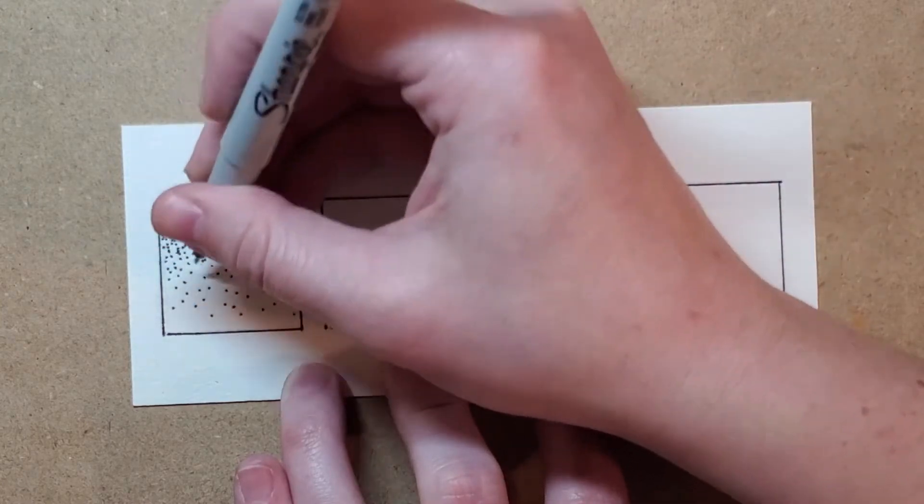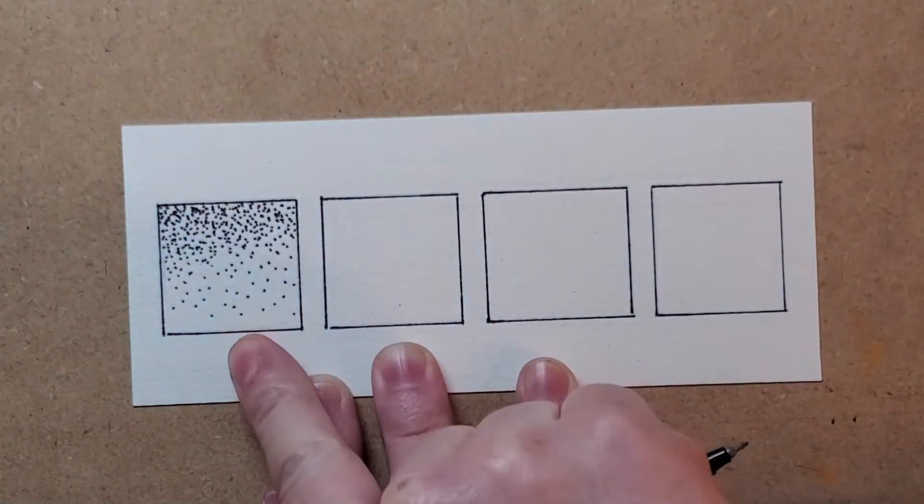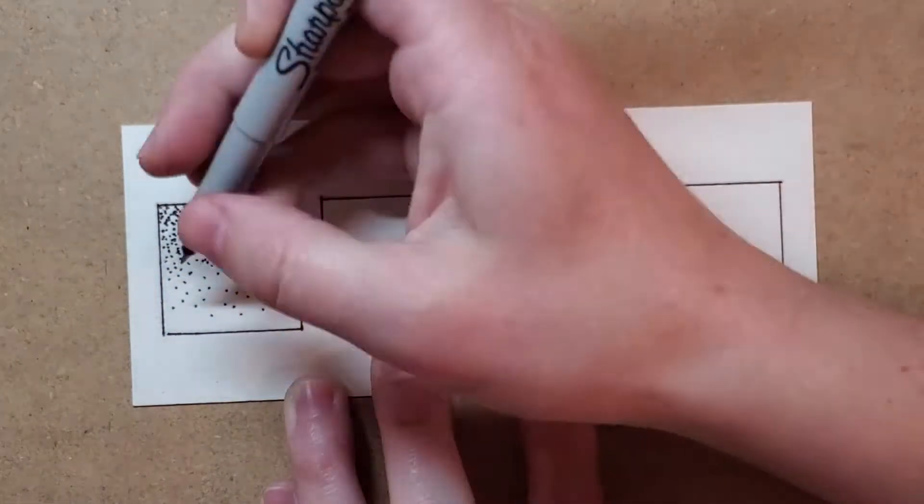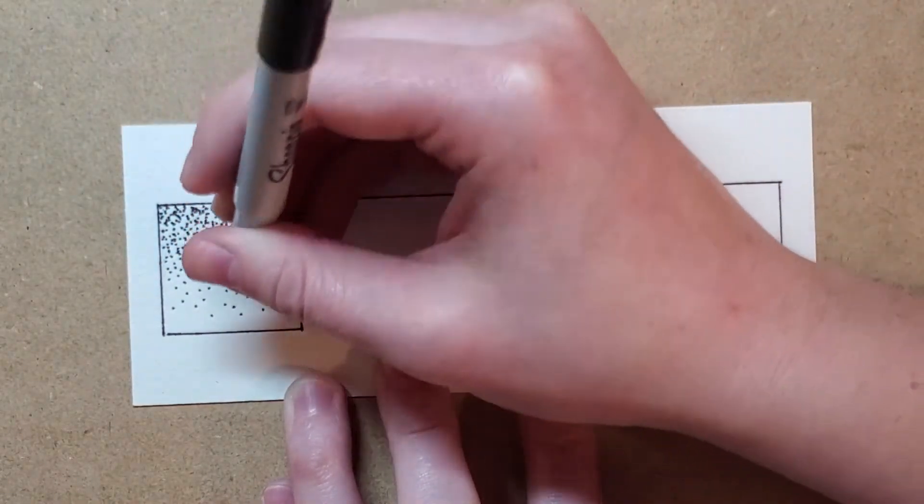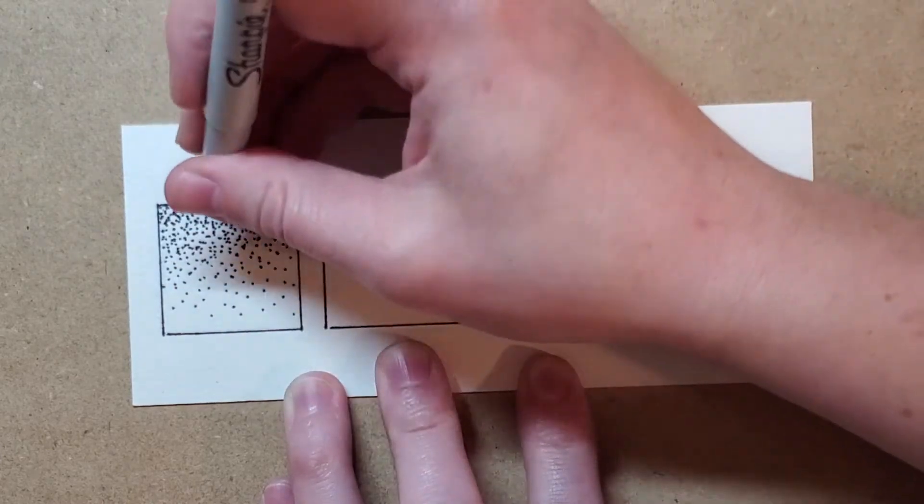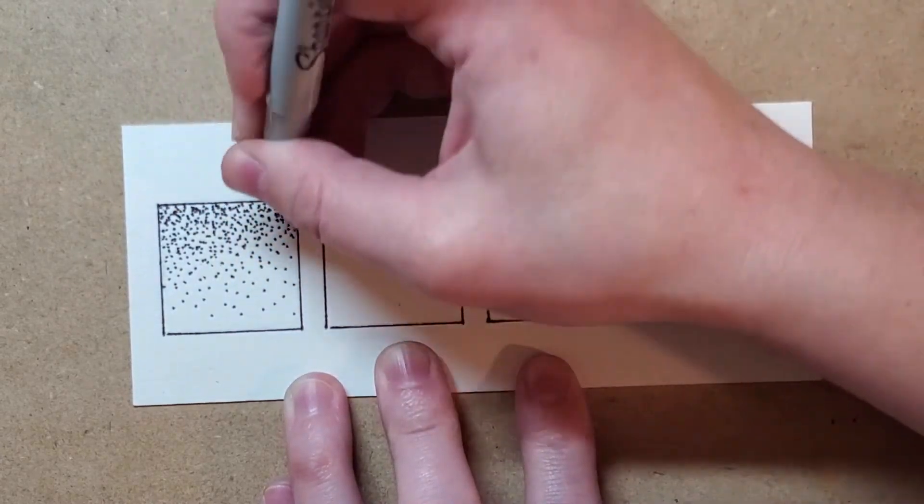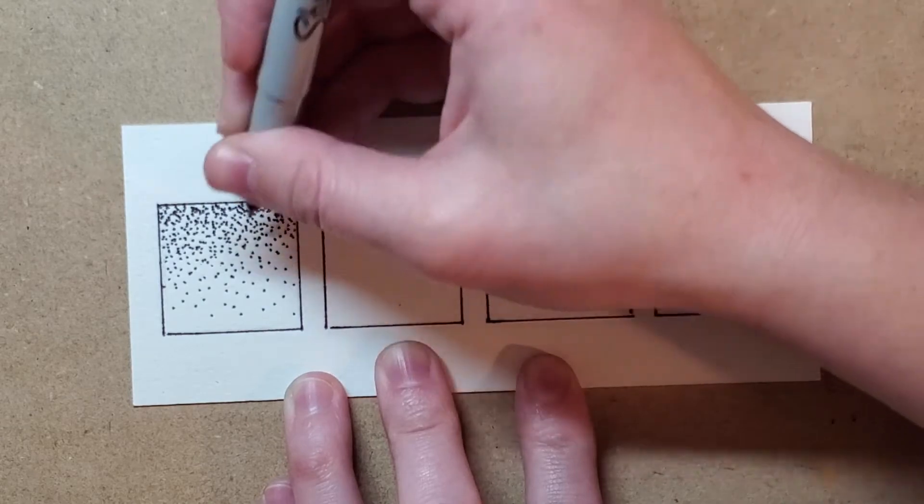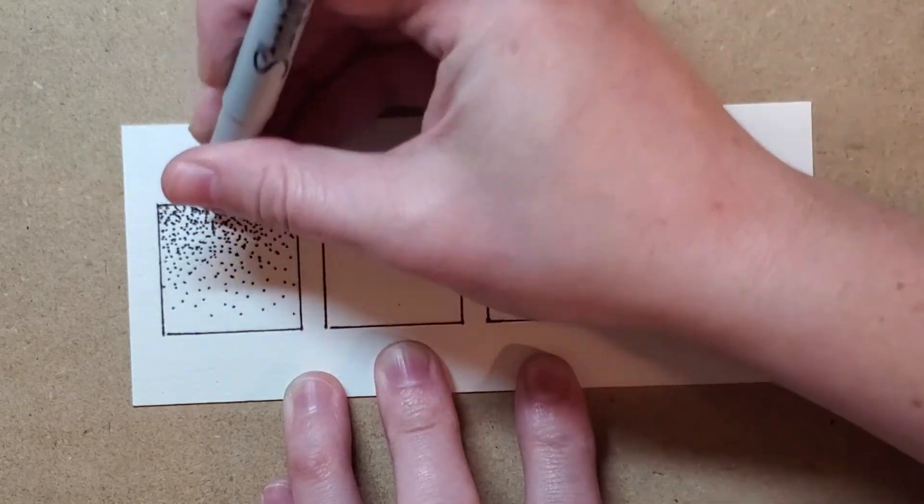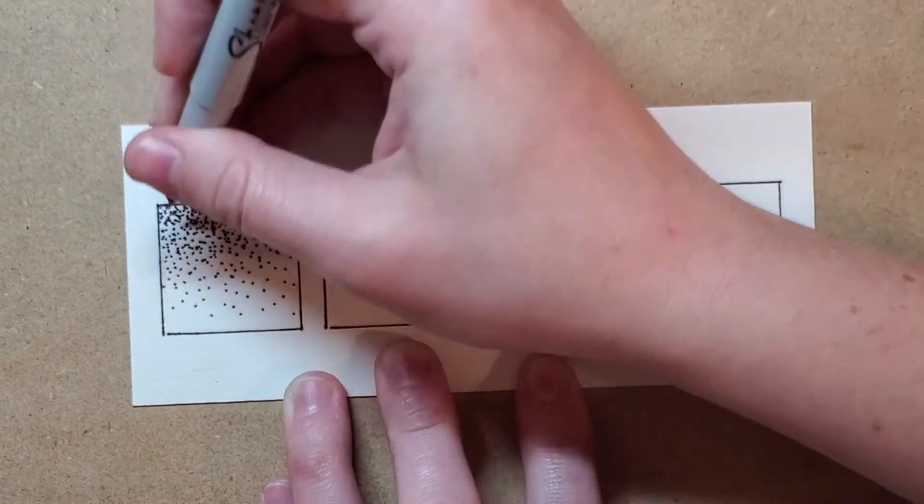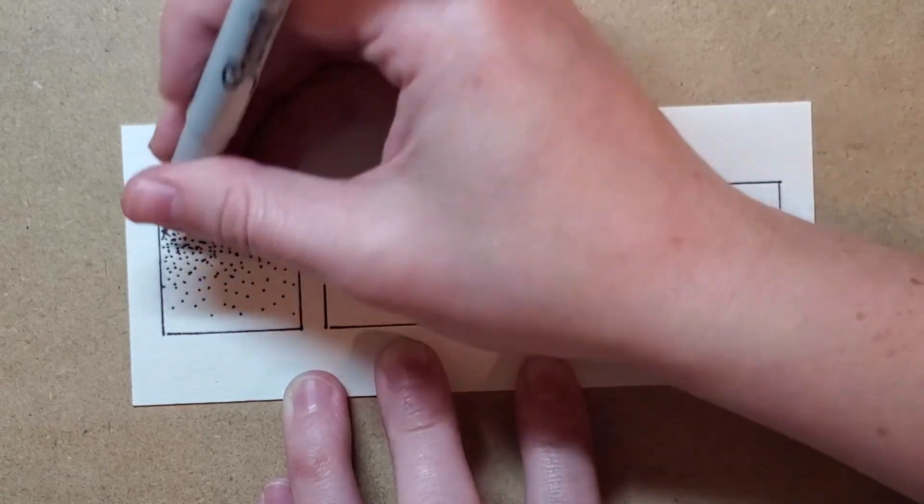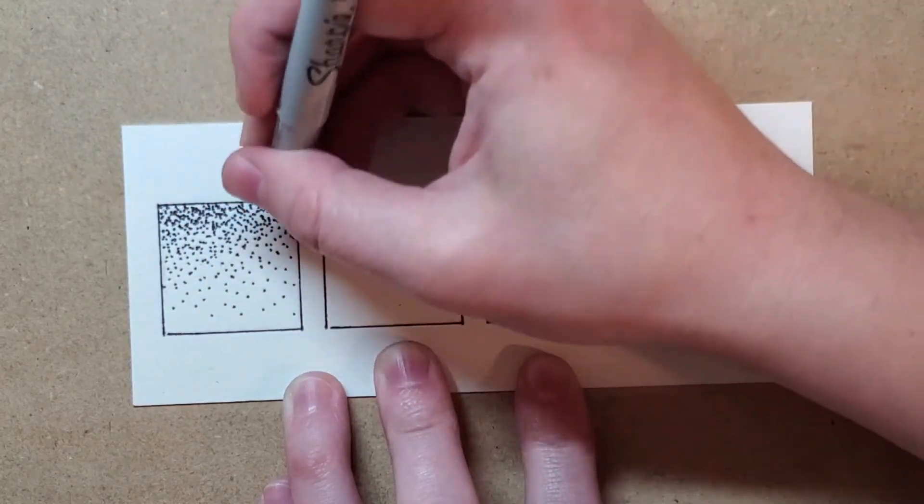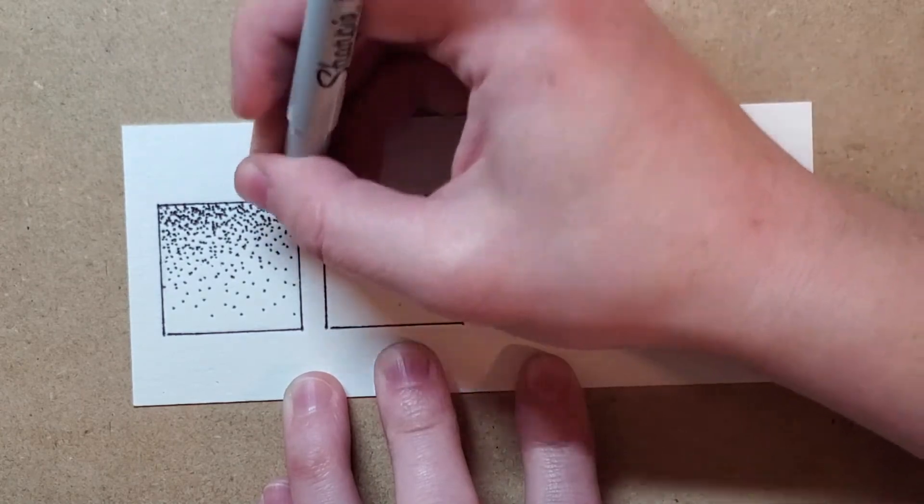And I'm kind of showing you how dots that are spread further apart will create a lighter value if you look at it from far away and squint. The dots that are closer together up here give you a darker value. And the more layers of dots I do over here, the closer those dots get. And that is stippling.